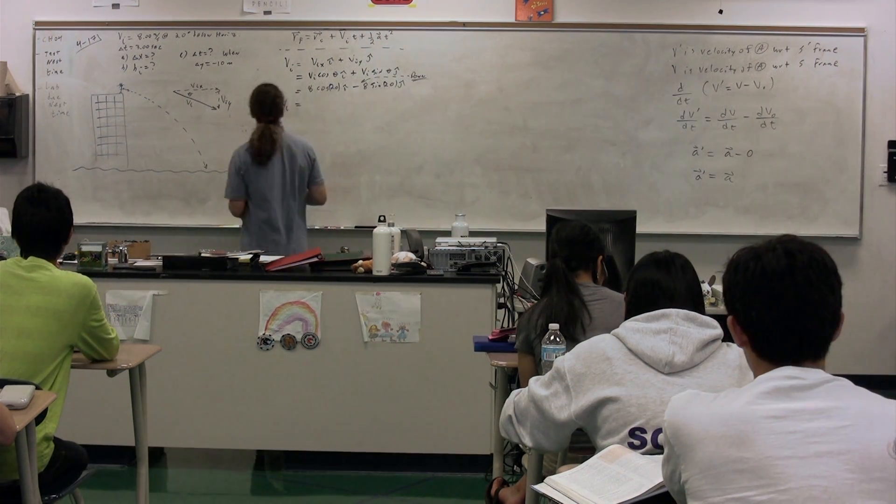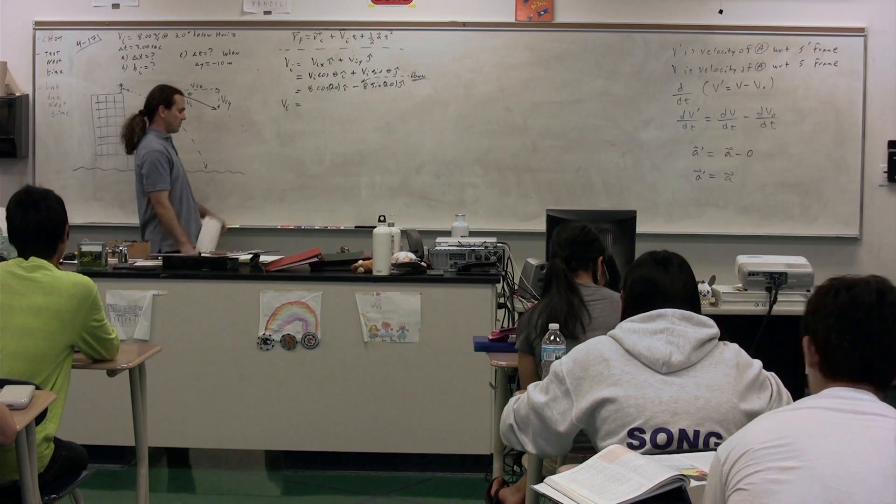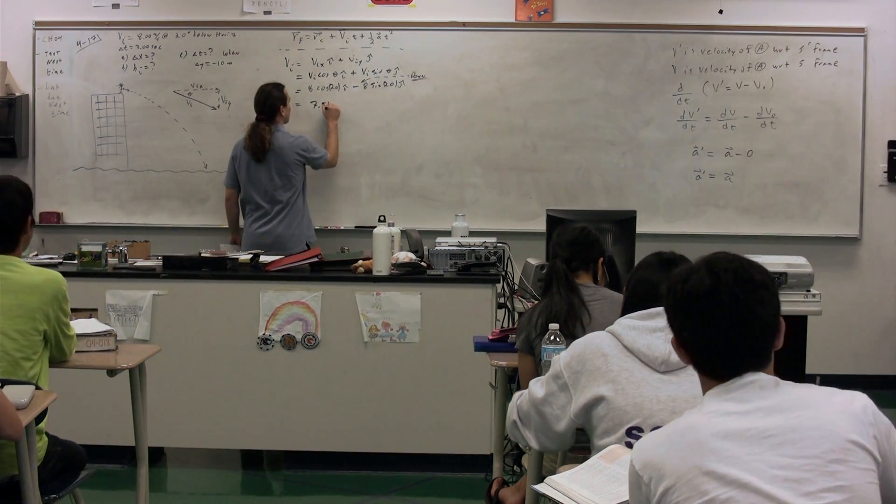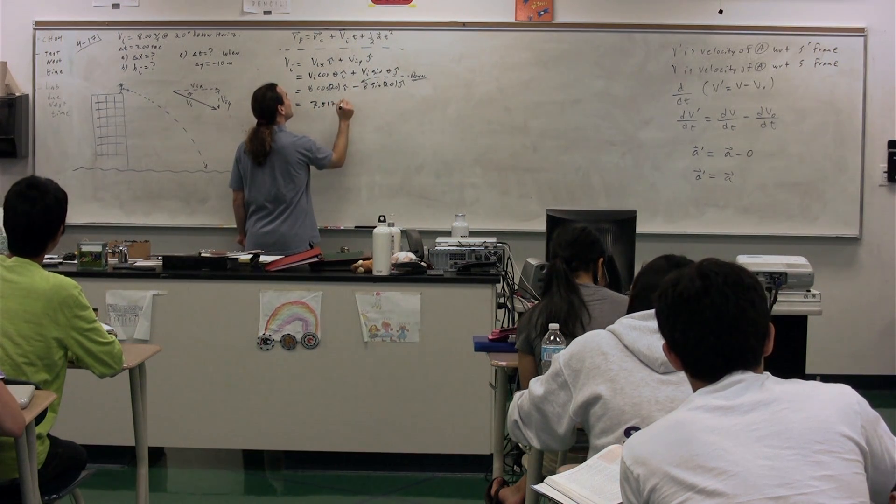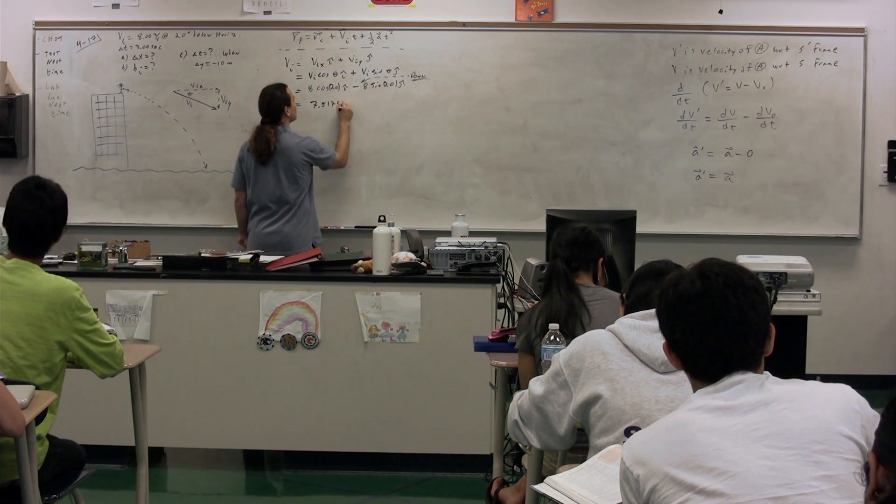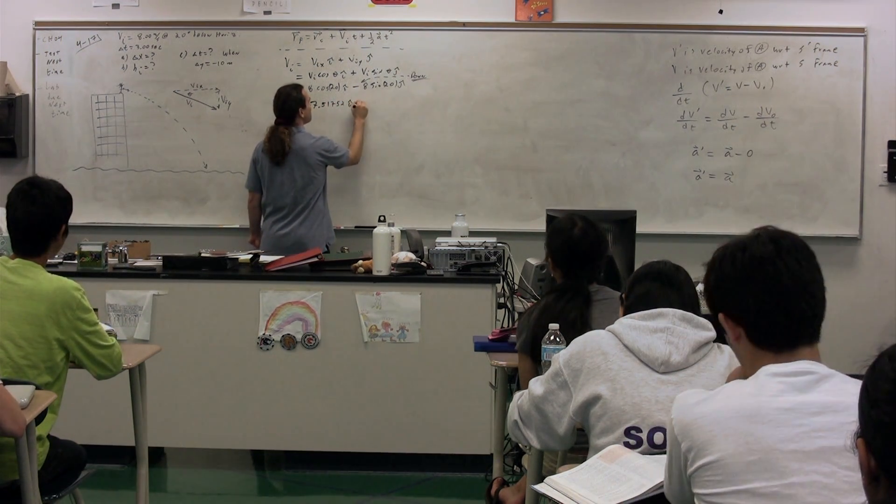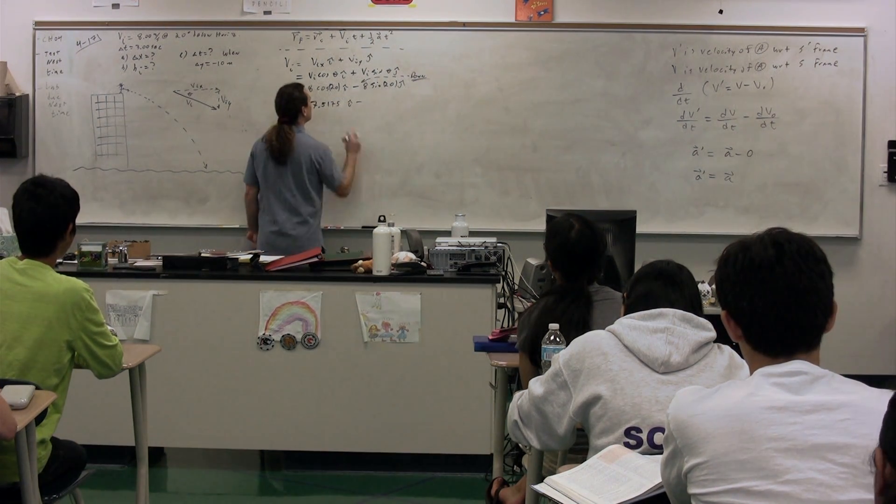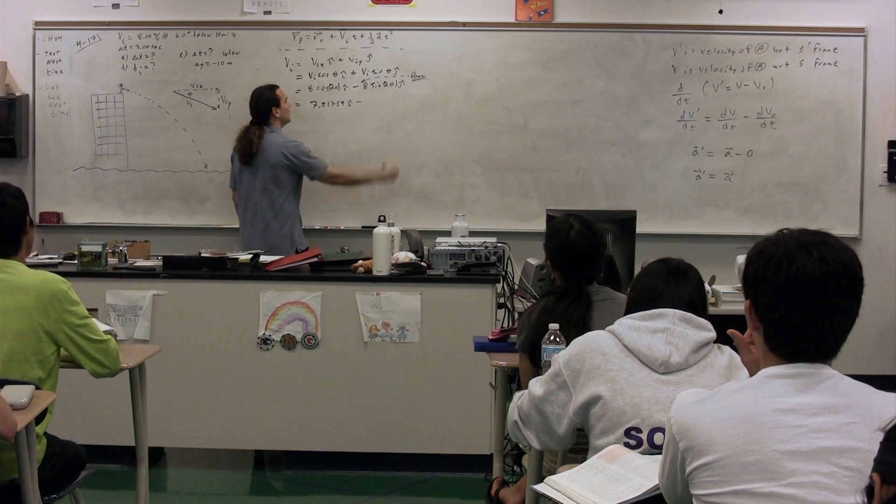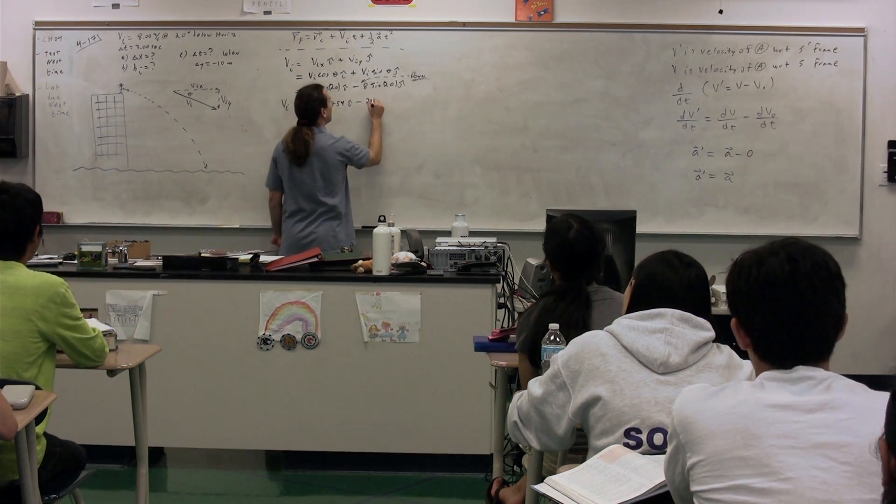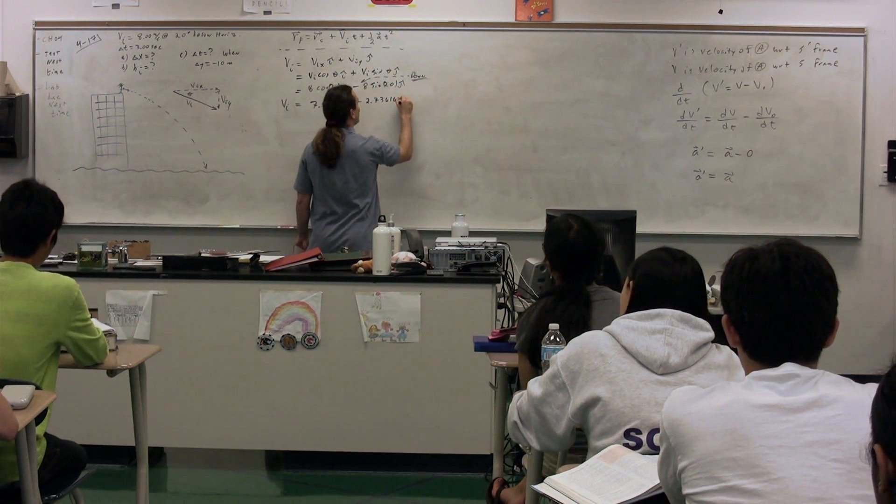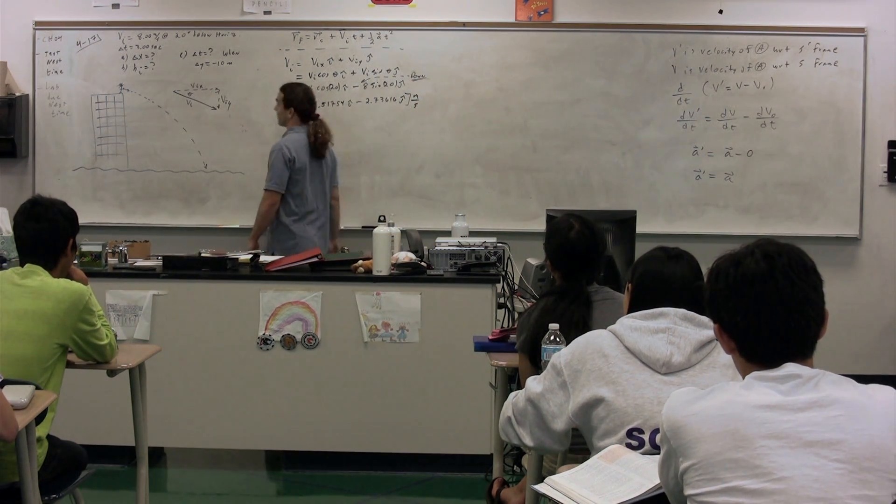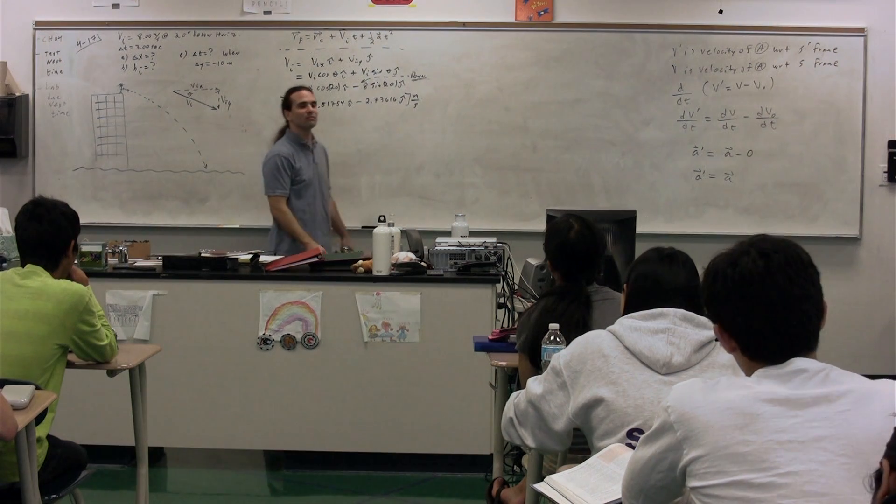So I need numbers now. The initial velocity, please. 8 cosine 20? 7.517541. 7.51754, 2 is plenty, times i minus? 2.73616 j. And at this point, I will identify, because we have numbers in here, meters per second. We have now our initial velocity as a vector.